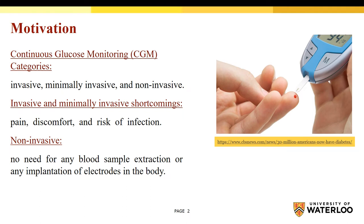There are three categories for continuous glucose monitoring: invasive, minimally invasive, and non-invasive. In invasive continuous glucose monitoring, a blood sample is extracted using a lancet — typically, the fingertip is the most widely used human body part. In minimally invasive, measuring the glucose level is done by subcutaneously needle-type electrodes implanted in the body. In order to overcome the shortcomings of invasive and minimally invasive systems, such as pain, discomfort, and risk of infection, there is a desperate need for a simple non-invasive and pain-free continuous glucose monitoring method, as it will make a major improvement in the field of diabetes care.